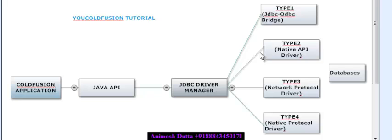With the use of Java APIs, we connect with different databases. It is not like other languages where you need to write code for connecting your application to the database — we get all those Java APIs with ColdFusion and we don't need to write those codes.